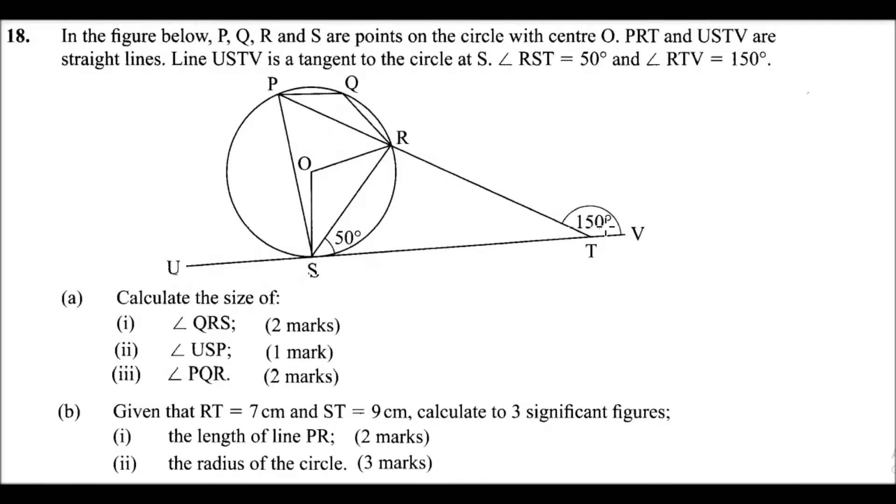Question number 18. We are told in the figure below, P, Q, R and S are points on the circle with center O. PRT and USTV are straight lines. Line USTV is a tangent to the circle at S. Angle RST is equal to 50 degrees and angle RTV is equal to 150 degrees. So this is the information given here.